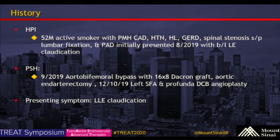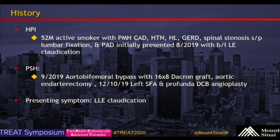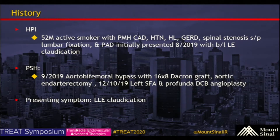This is a 52-year-old gentleman who is currently an active smoker with past medical history significant for CAD, GERD, and spinal stenosis, status post lumbar fixation, who presented with claudication. His past surgical history is significant for an aorta-bifemoral bypass, an aortic endarterectomy, and subsequently DCV angioplasty. He's presenting today for left lower extremity claudication.